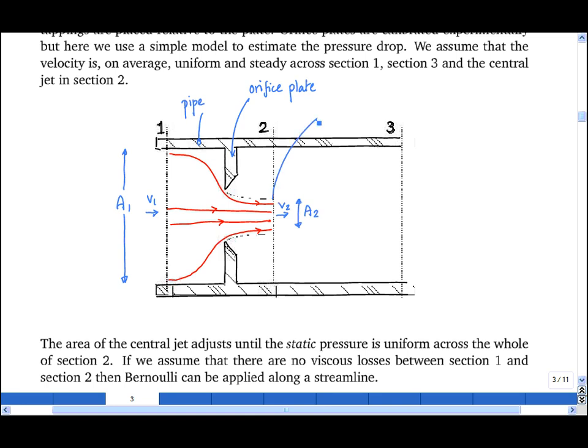In section 2 we've chosen that section such that there's no streamline curvature, which means that the static pressure is uniform in the radial direction. On either side of the jet there are recirculation zones, and because the flow is circulating we can safely assume that the pressure at the two points I've circled is roughly the same.